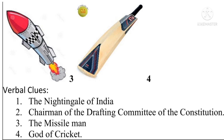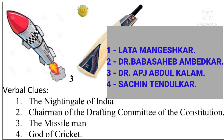First, the Nightingale of India, Lata Mangeshkar, is associated with music — that's why she is the correct answer. Second, the chairman of the drafting committee of the Constitution who was conferred the Bharat Ratna award is Dr. Baba Sahib Ambedkar. Third, the missile man — known not just in India but all over the world — Dr. APJ Abdul Kalam, is known as the missile man and was an awardee of the Bharat Ratna.